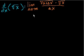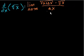Looking at that expression, there's not much simplification I can do to make this come out with something meaningful. So I'm going to multiply this fraction — multiply the numerator and the denominator by the conjugate of the numerator.